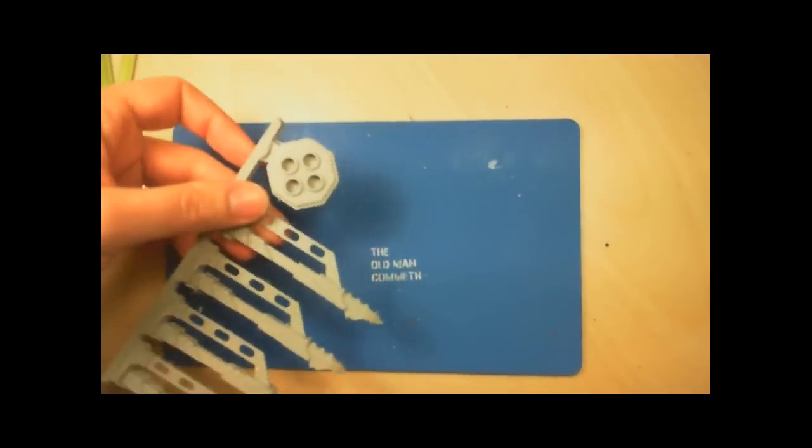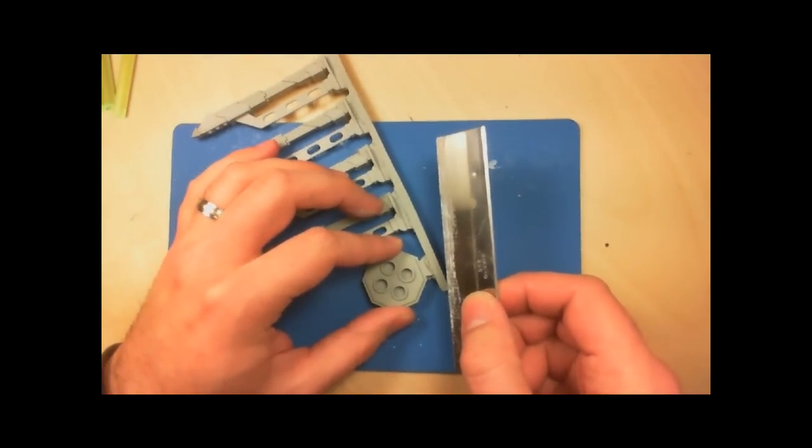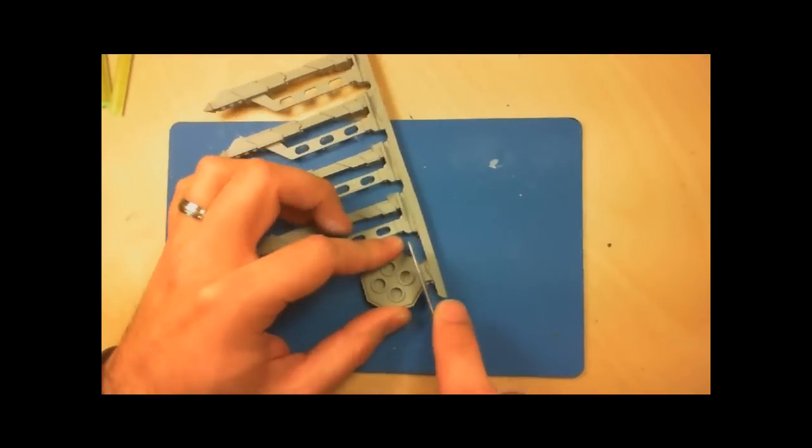I have my handy-dandy cutting mat here and a bone saw. I do recommend the bone saw over a hobby knife for cutting off of the sprue. You can, of course, use your hobby knife, but it's going to take a little longer.